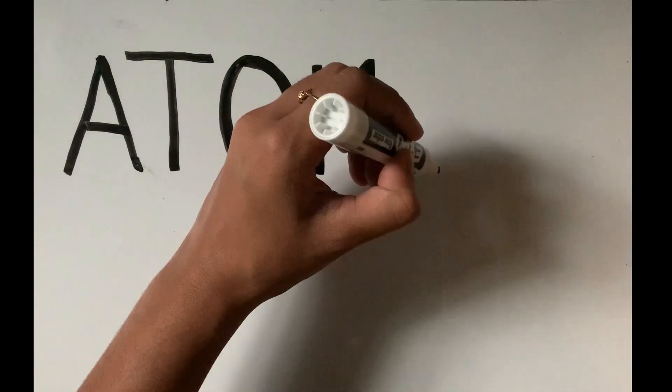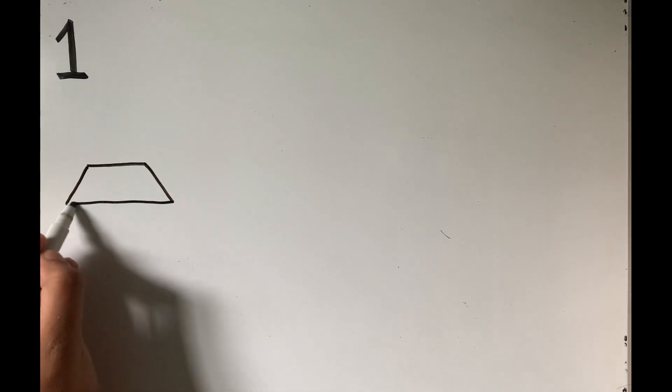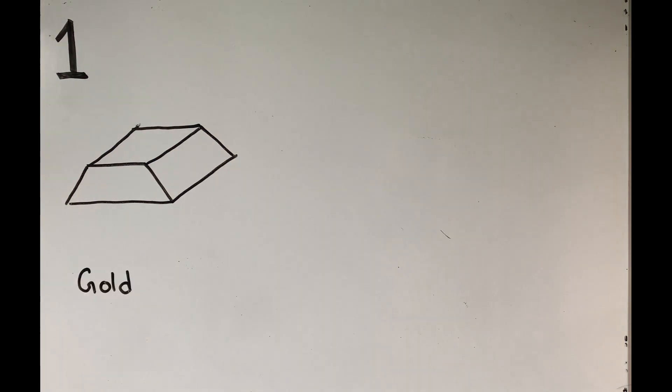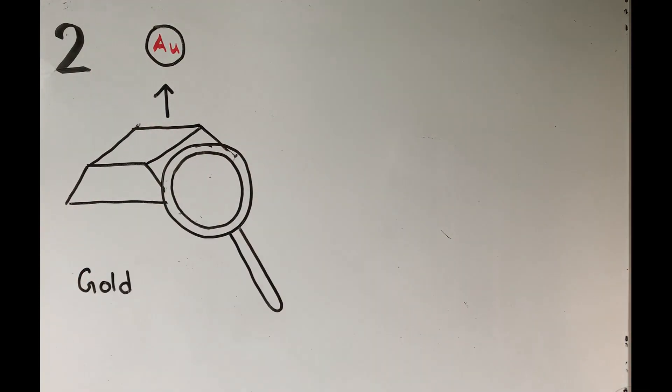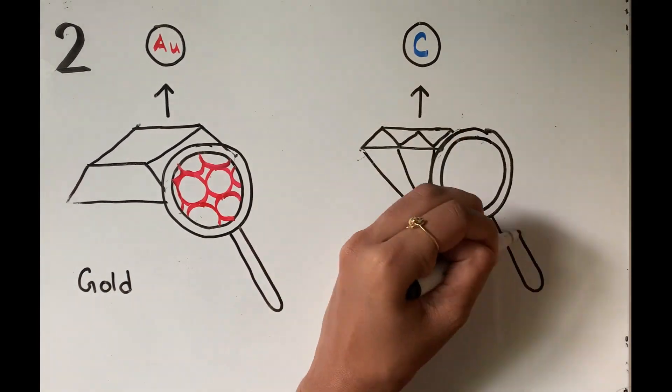John Dalton was an English scientist that created the definition of atoms that we use today. His atomic theory can be summarized in four parts. The first idea is that elements are made up of small particles called atoms. The second idea is that the atoms in an element are all identical, and no two elements have the same type of atom.